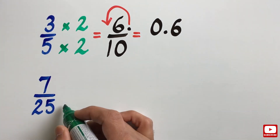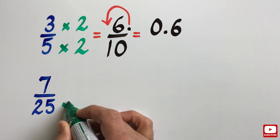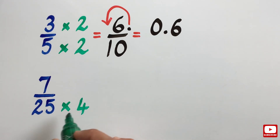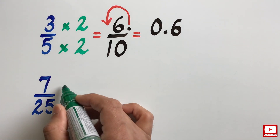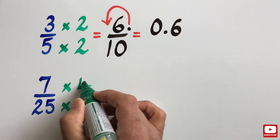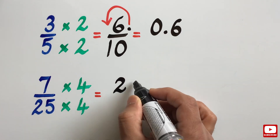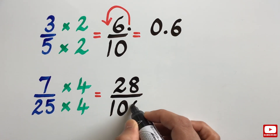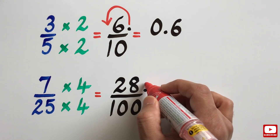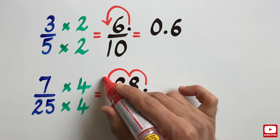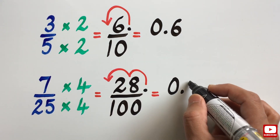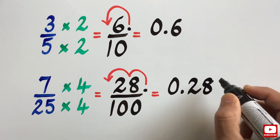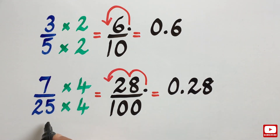In this example, in order to rewrite the fraction so that the denominator is a power of 10, we need to multiply the denominator by 4 so that we get 100 in the denominator. And since we are multiplying the denominator by 4, we also need to multiply the numerator by 4. When we do that, we get the equivalent fraction 28 over 100. Since we are dividing by 100, we move the decimal point two places to the left, giving us 0.28 as the decimal form of 7 over 25.